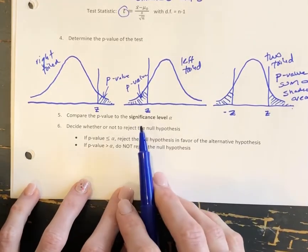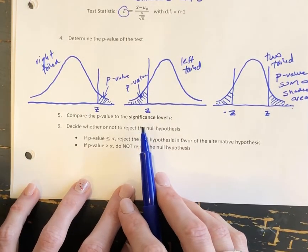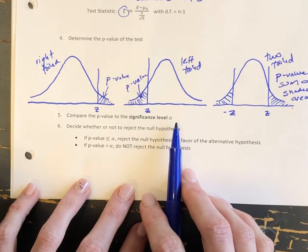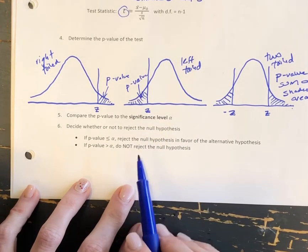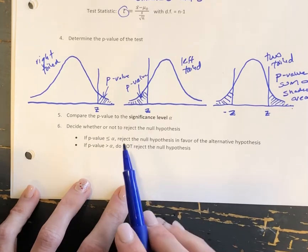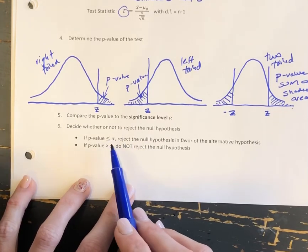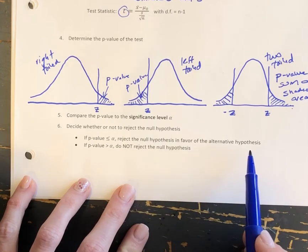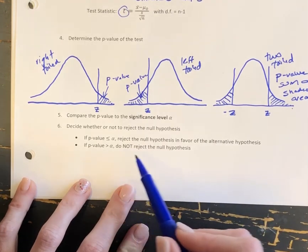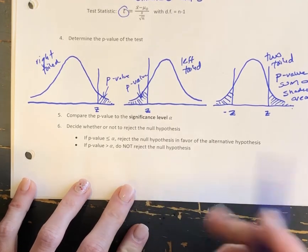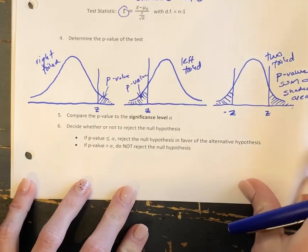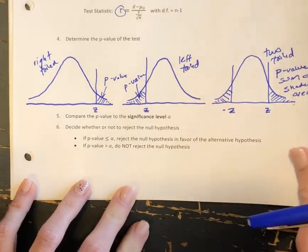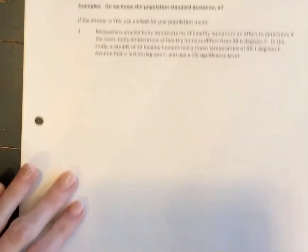Step five: we compare our p-value to the significance level alpha from step one. Step six uses the same decision criterion — if our p-value is less than or equal to alpha, we reject the null and conclude the alternative. If the p-value is greater than alpha, we do not reject the null. At this point we'll go to the next page and look at the last step and then an example.